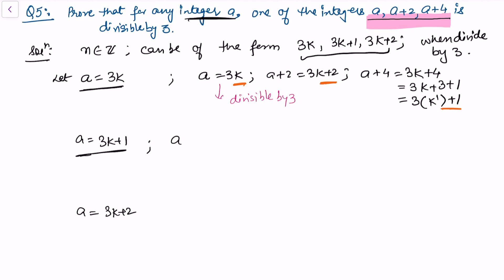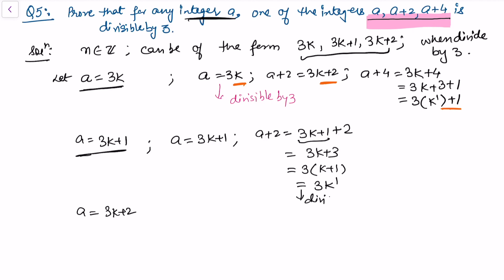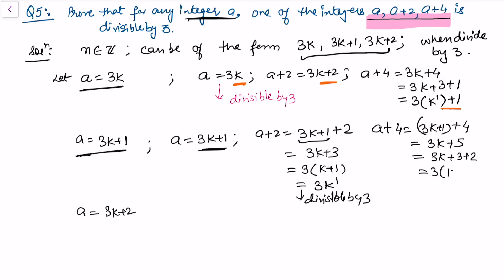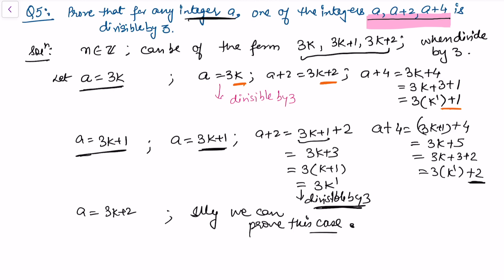If a = 3k+1, then a+2 = 3k+3 = 3(k+1), which is divisible by 3. And a+4 = 3k+5 = 3(k+1)+2, leaving remainder 2. So in this case a+2 is divisible by 3. The third case a = 3k+2 can be verified similarly, completing the proof that one of a, a+2, a+4 is always divisible by 3.